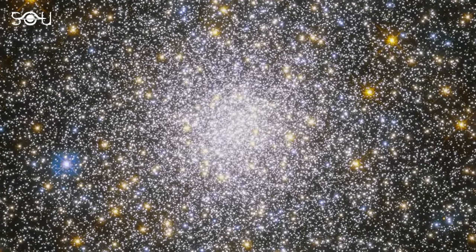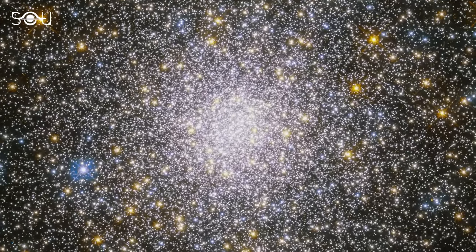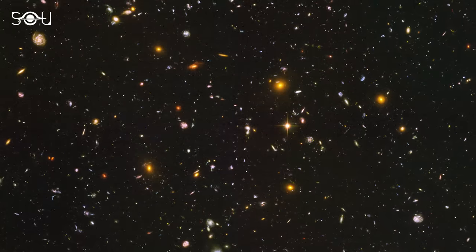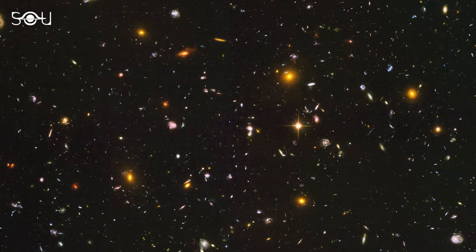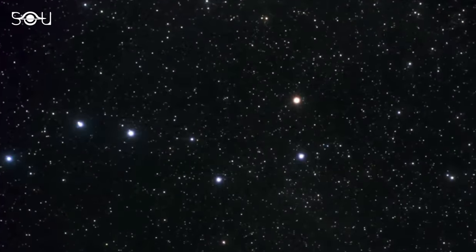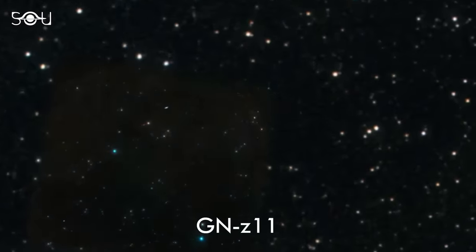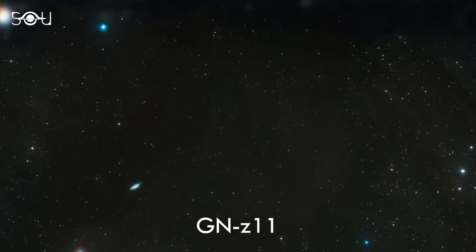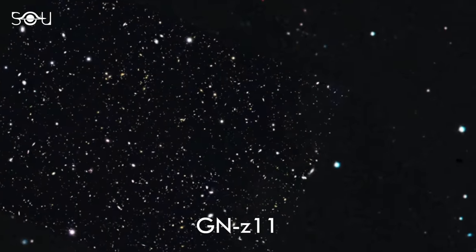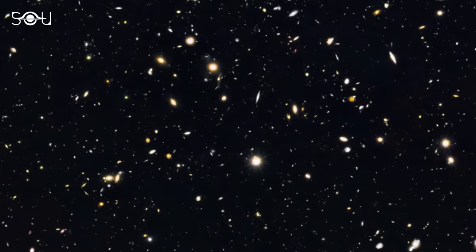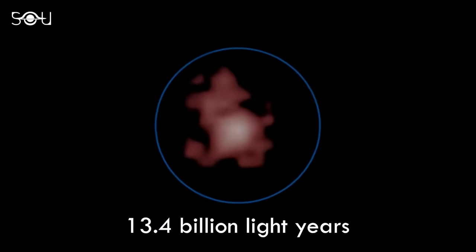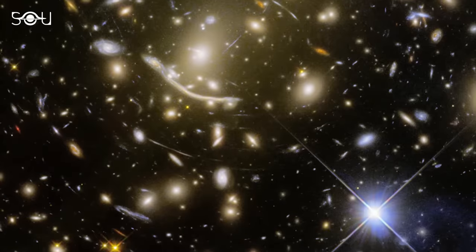Spotting the first generation of stars and galaxies has been a holy grail in astronomy. But the problem is that these galaxies are very faint and highly redshifted. Until 2022, GNZ 11 was the oldest and most distant known galaxy yet identified in the observable universe.